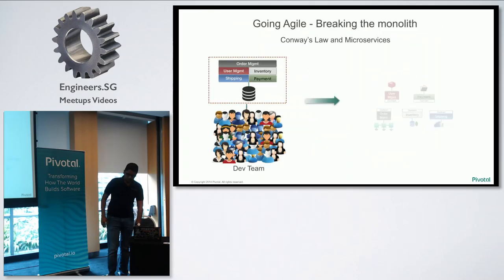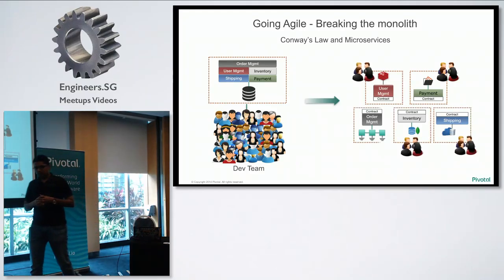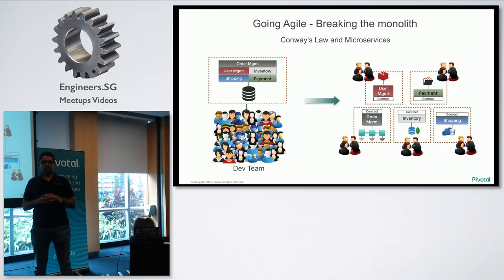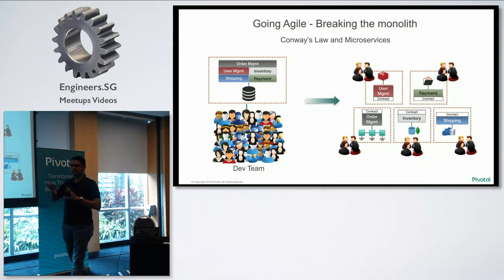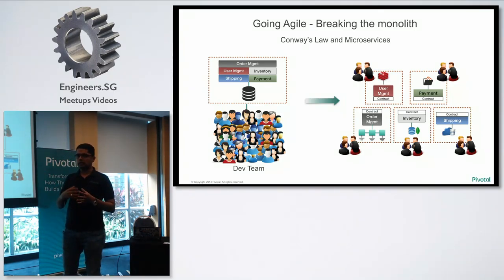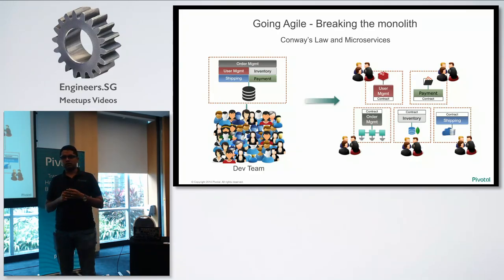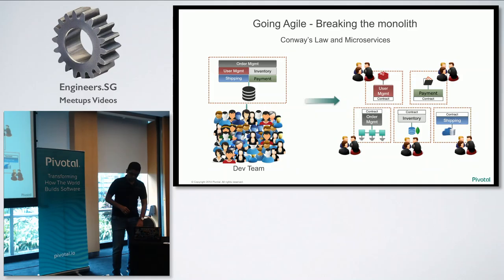If you're going agile, in a traditional monolithic architecture you have hundreds of developers all working on one big thing. The challenge is all these developers tend to work in a dependent mode — they can't work independently. Whereas on the other side, you're deconstructing it, making it into a microservices architecture where each one is like a service, and you have smaller agile teams really focused on building that one thing.